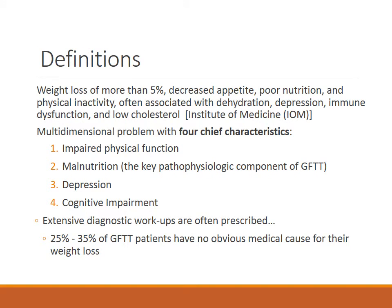Undesired weight loss in the elderly causes a reduced quality of life and contributes to serious illness. Elderly residents of nursing facilities who lose 5% of their body weight in one month are four to six times more likely to die within a year. Poor prognosis is also associated with low prealbumin and cholesterol levels. Malnutrition in the elderly can result in pressure sores, functional decline, longer rehab, and multiple medical conditions. It is projected that by 2060, older adults — those 65 and older — will account for 21.9% of the population.